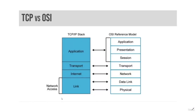The network access layer of the TCP/IP model combines layer 1 and layer 2 of the OSI model. It describes layer 1 issues such as energy, bits, and the medium used to carry them — copper, fiber, wireless, etc. It also describes layer 2 issues like converting bits into protocol units such as Ethernet frames, MAC addresses, and network interface cards.